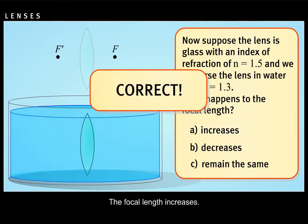Correct. The focal length increases. This is because the difference between the index of refraction of the lens and that of the surrounding medium is less than in air. And as a result, the light rays refract less.